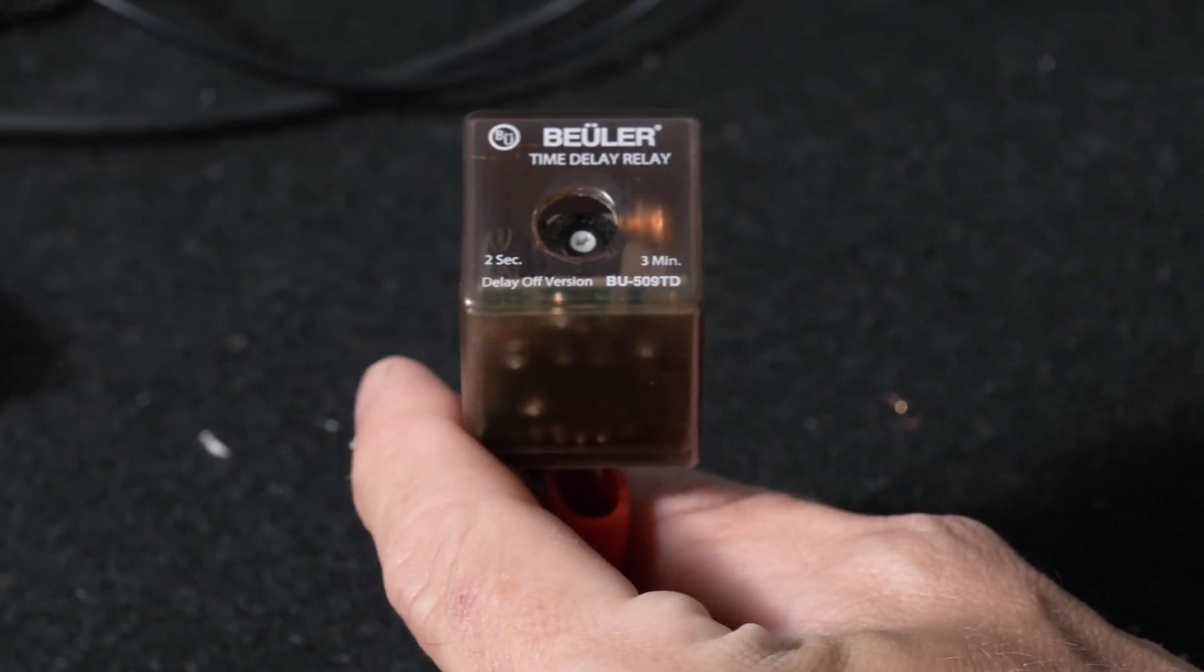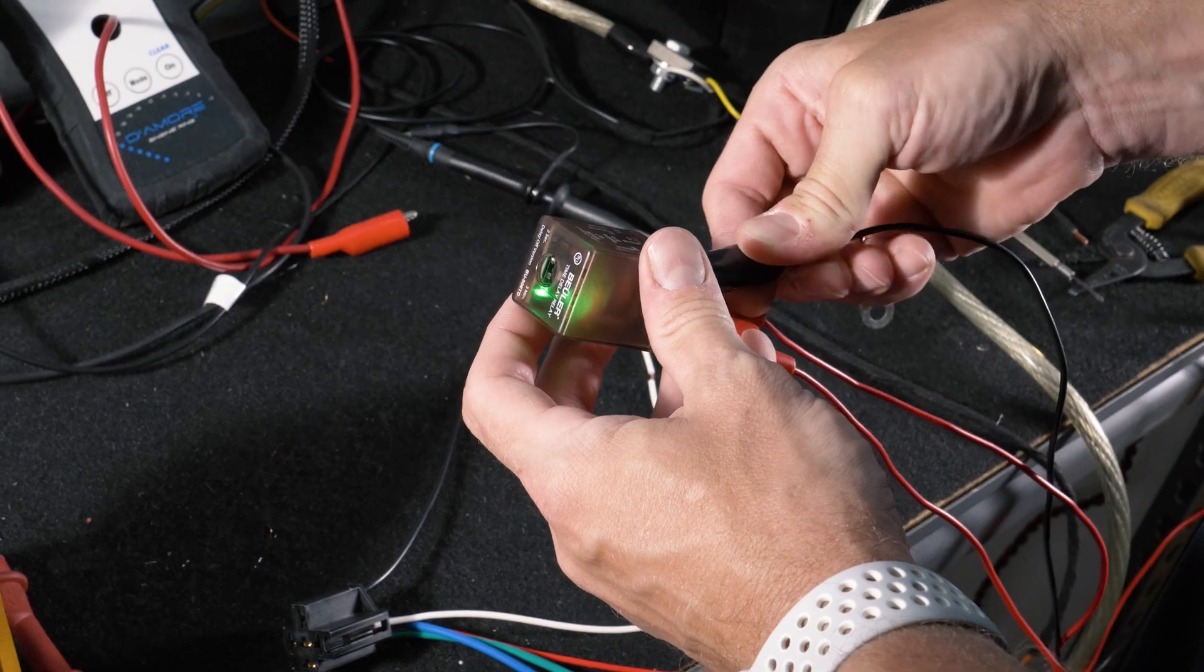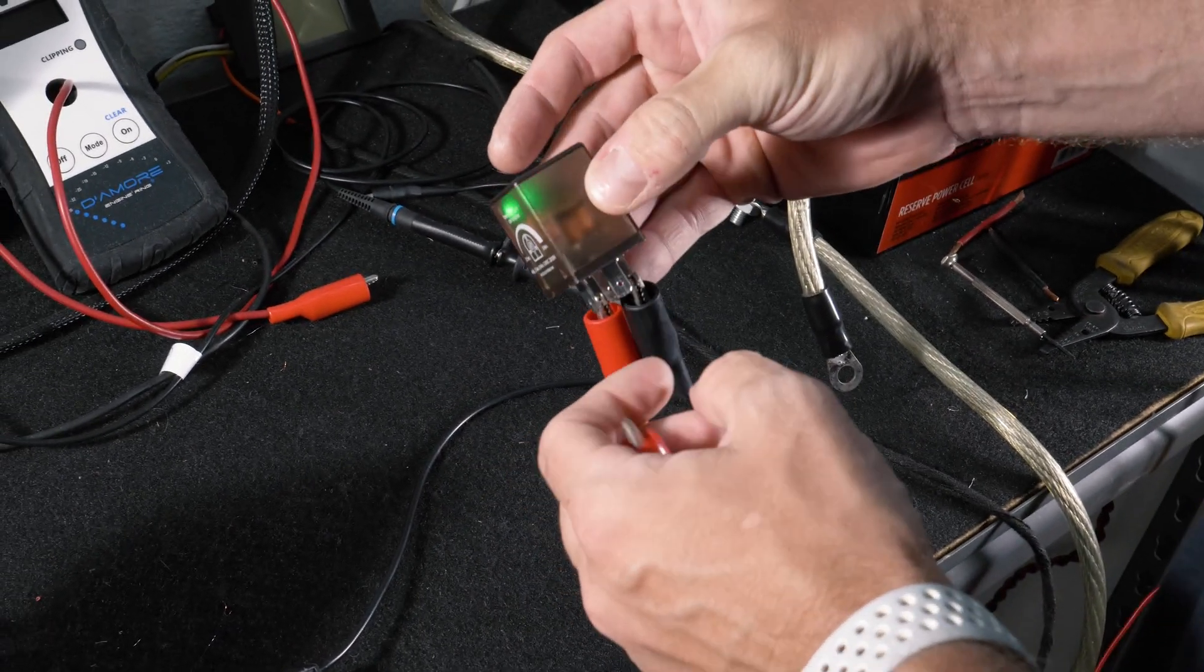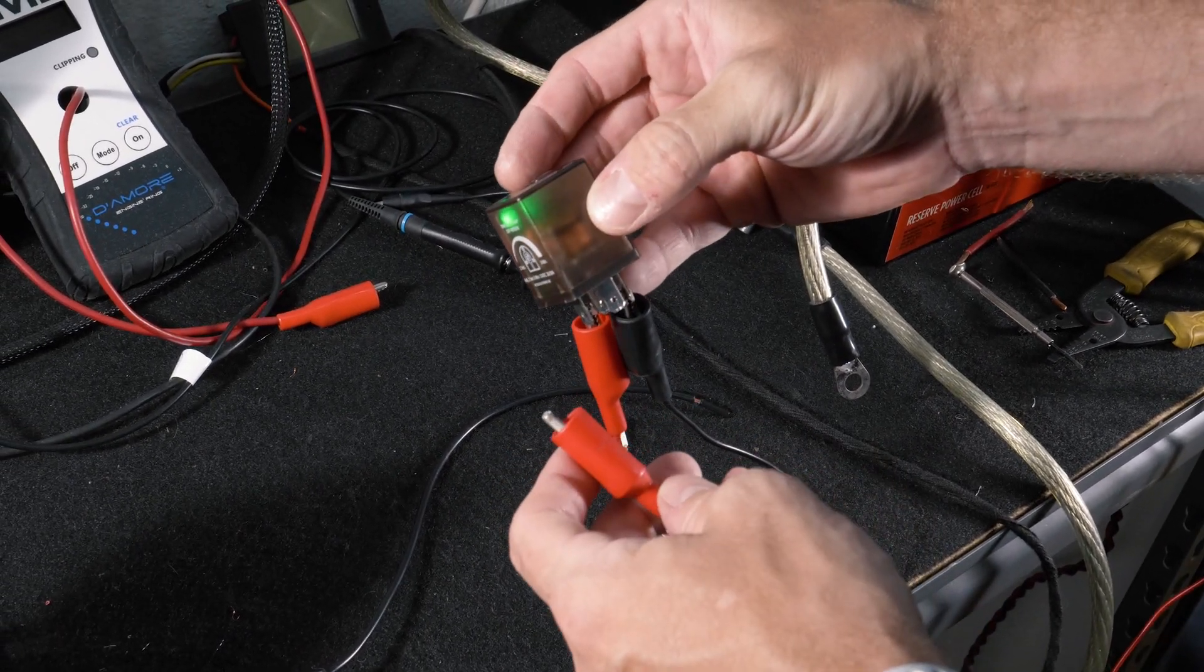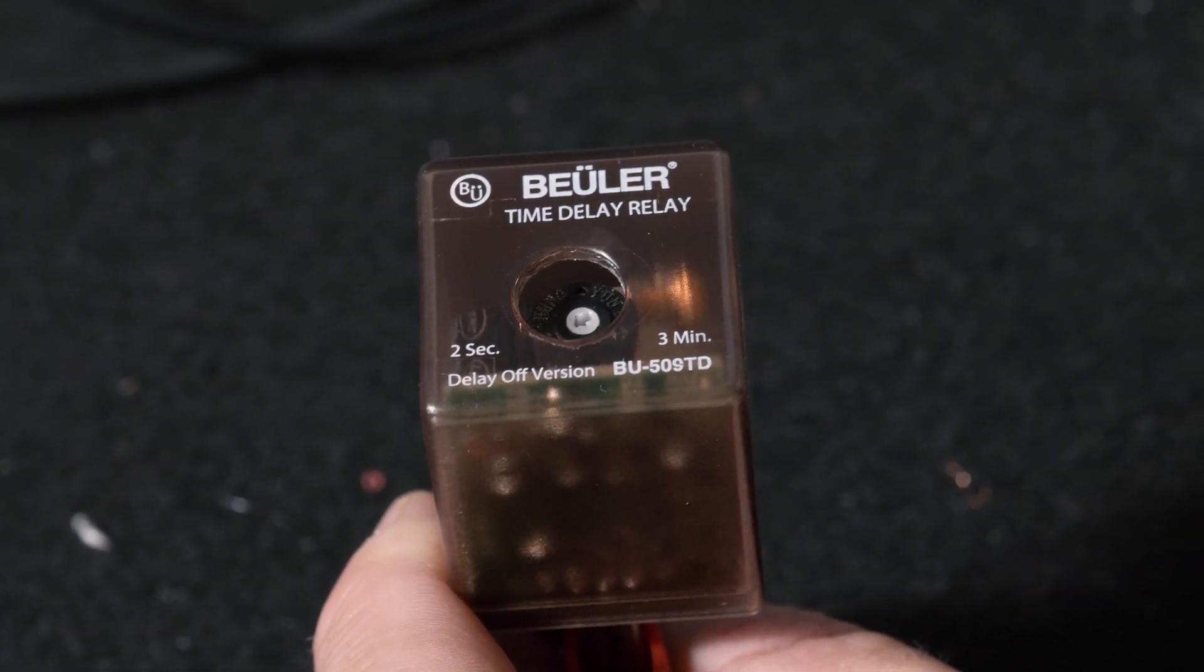For those of you that don't know what this relay can do, it provides a time delay on function with a simple momentary pulse. So if you provide a 12 volt pulse, it will stay on from anywhere from 2 seconds to 3 minutes.